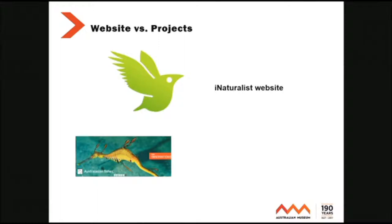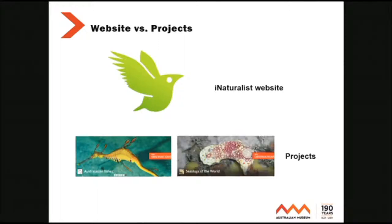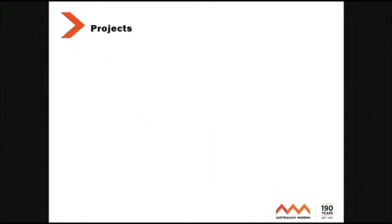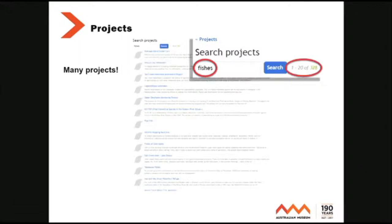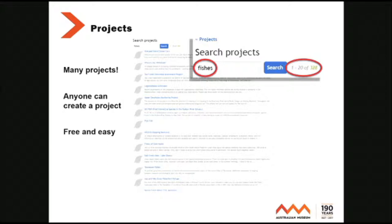It's run out of California Academy of Sciences. And under the website you have projects. That's mine, Australasian Fishes. And as for projects, there are many of them — many, many projects. If you search on fishes you get 328 matches, and that's everything from fishes of Lake Baikal to fishes of Oodnadatta and fishes of whatever. Huge projects, tiny projects, there's all kinds of stuff. Anyone can set up a project. It's free and it's easy.